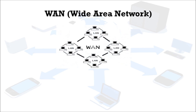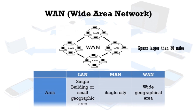WAN ensures that computer users in one location can communicate with computers and users in other locations. WAN connects more than one LAN and is used for large geographical areas spanning larger than 30 miles. Comparing LAN, MAN, and WAN by area: LAN may exist in a single building or small geographical area, MAN in a city, while WAN consists of a wide geographical area — even the whole planet.